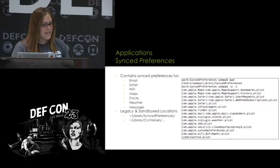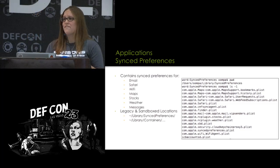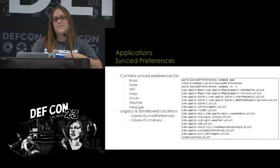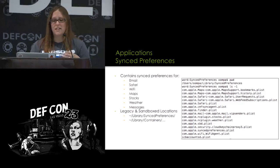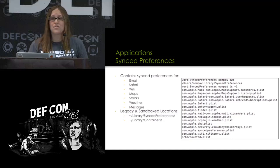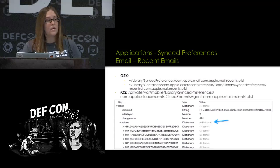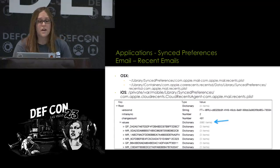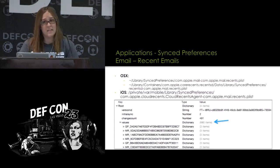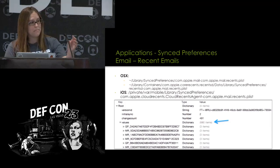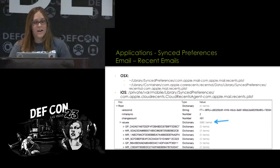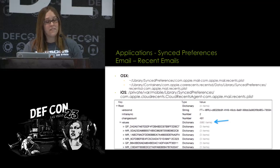Now we're going to get into the actual nitty-gritty of the data. We're going to be looking at a lot of plists. If you've never done Mac analysis before, there are these little files called plists — the only thing I can compare them to is registry-type files. They're key-data values basically describing a lot of the configuration and data saved across the systems, found on both OS X and iOS.